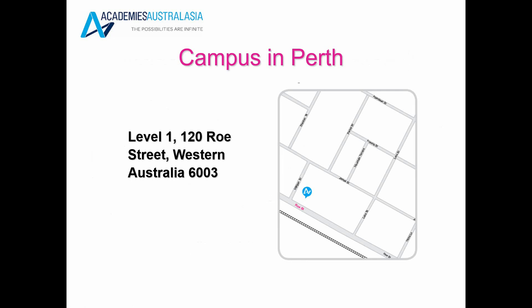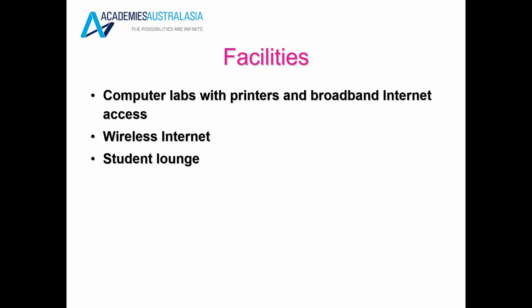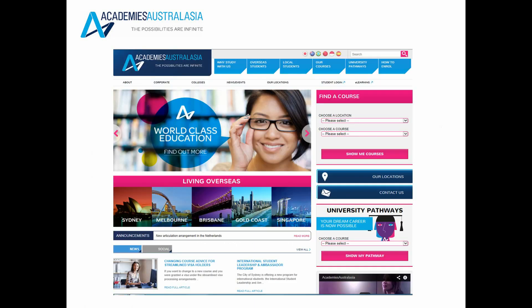Our campus in Perth is on Rose Street. Our campus has computer labs with printers and broadband internet access. It also has wireless internet and a student lounge. This is our website.